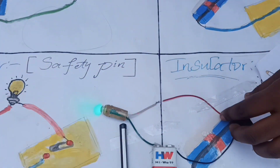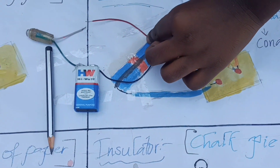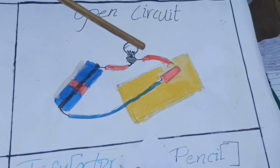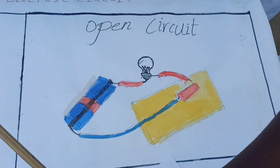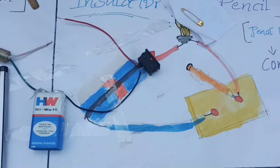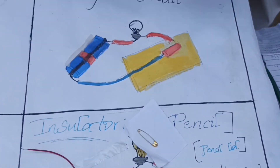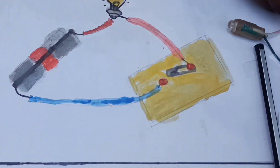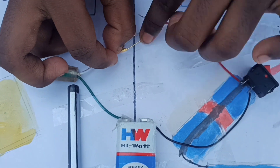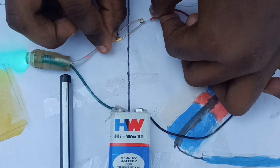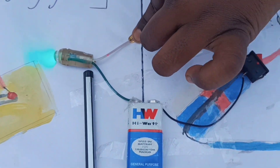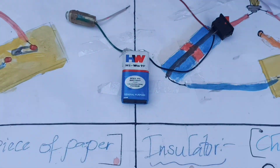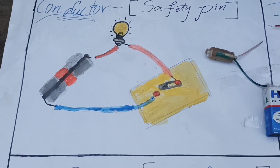Next we will show an open circuit. When we turn on the switch and remove the connection, the bulb does not glow — so it is an open circuit. We are now connecting a safety pin, which is a conductor. A material which allows current to pass through it is called a conductor.